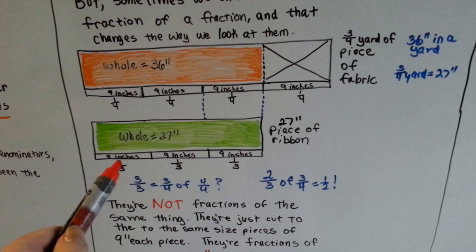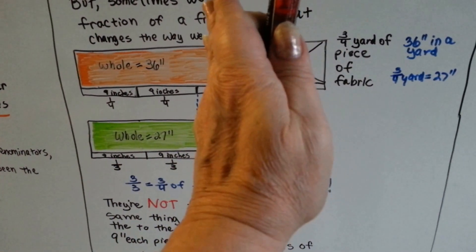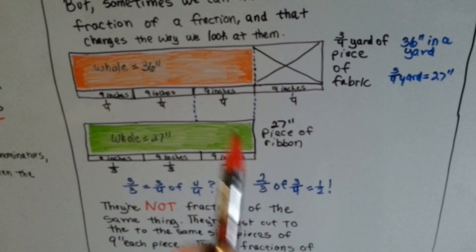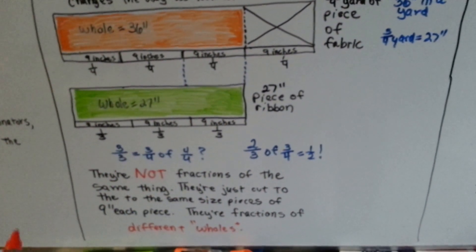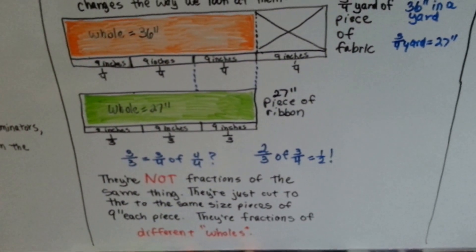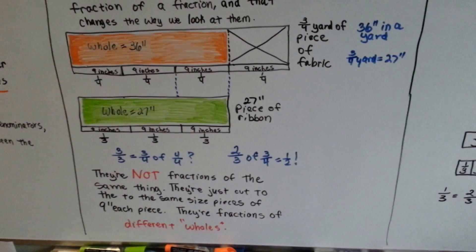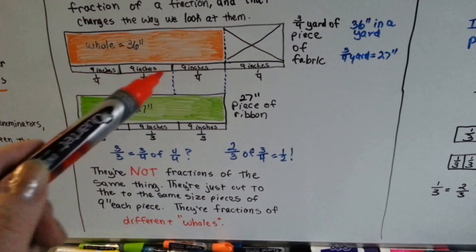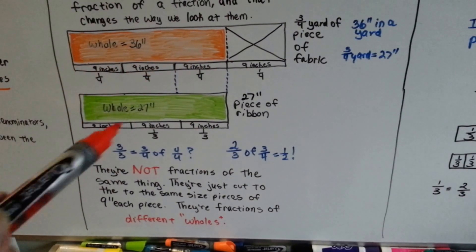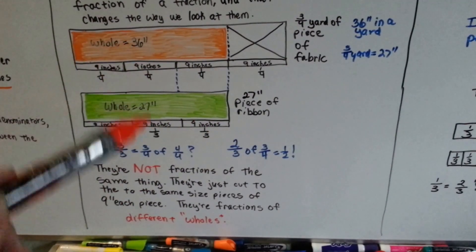Well, how can a fourth be a third? How could two of these thirds equal two-fourths? A half a yard. Isn't that odd? Well, they're not fractions of the same thing. That's the problem. They're just cut to the same length, the same size. They're nine inches in each part. That's where the confusion is. They're fractions of different wholes.